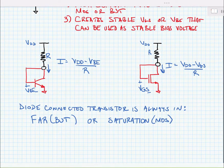Now that we've created a relatively stable voltage, VBE and VGS by running that current through those devices, let's see how we might use it.